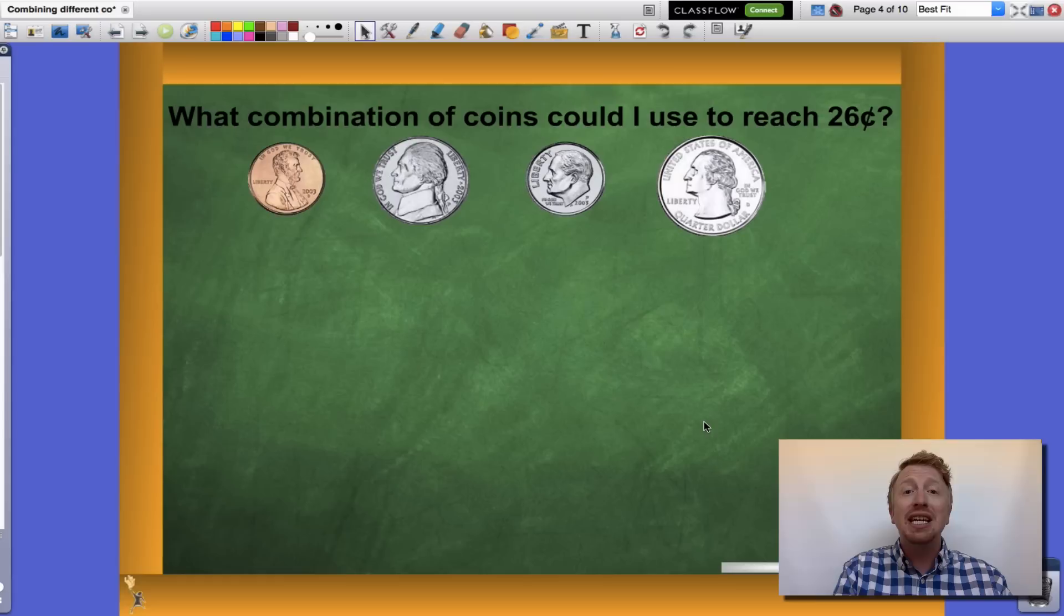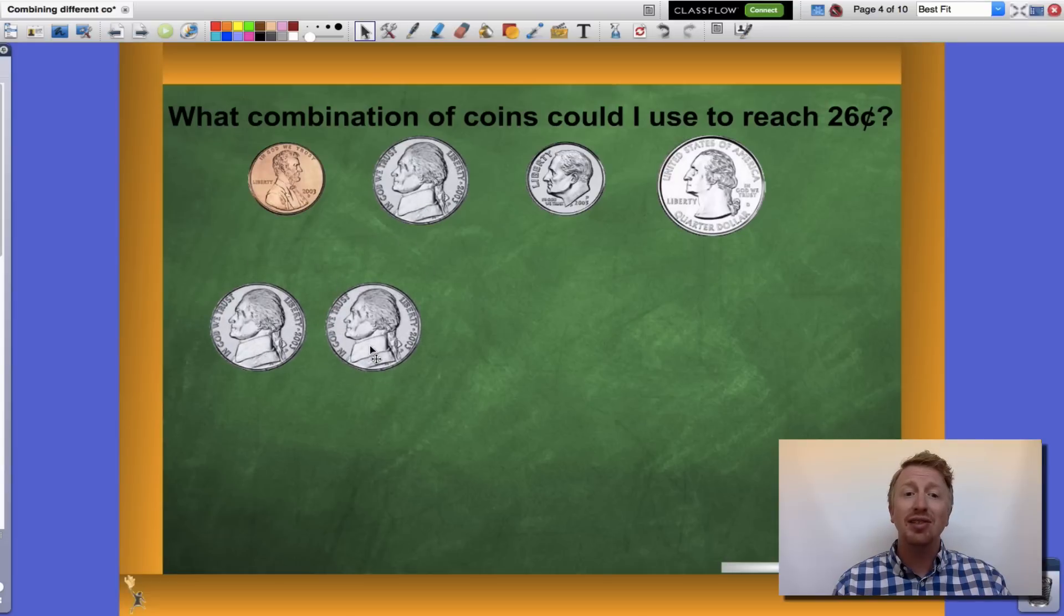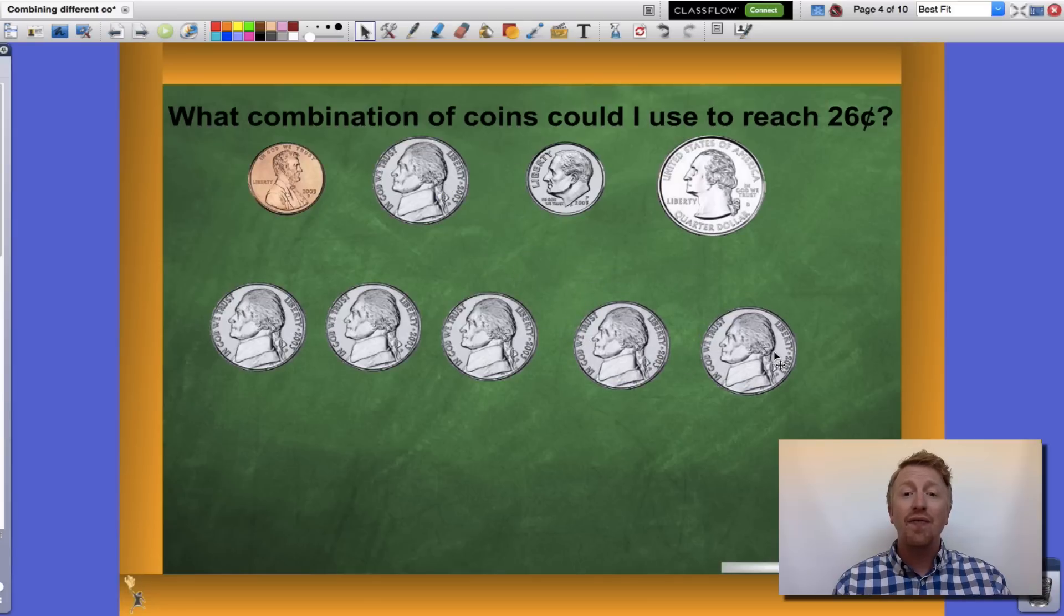What if I didn't have any dimes? I could use nickels. Five nickels will get me to 25 cents, as they are each worth 5 cents apiece. Let's add the penny and get us the rest of the way to 26 cents.